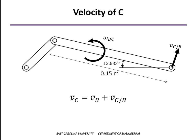Since B and C are on the same rigid body, we can write that relative velocity, that is, the velocity of C relative to B is omega cross the position vector of C relative to B.